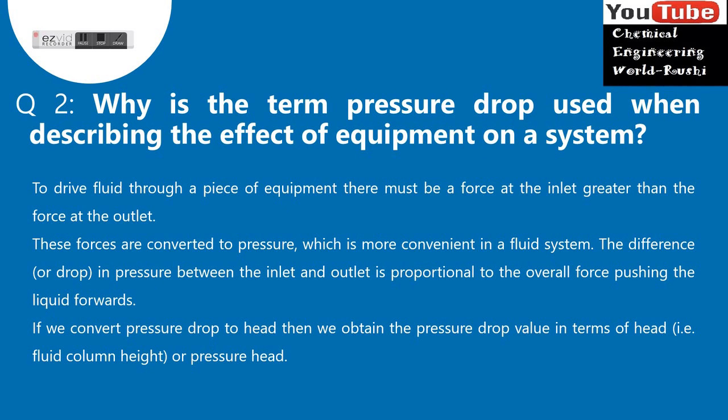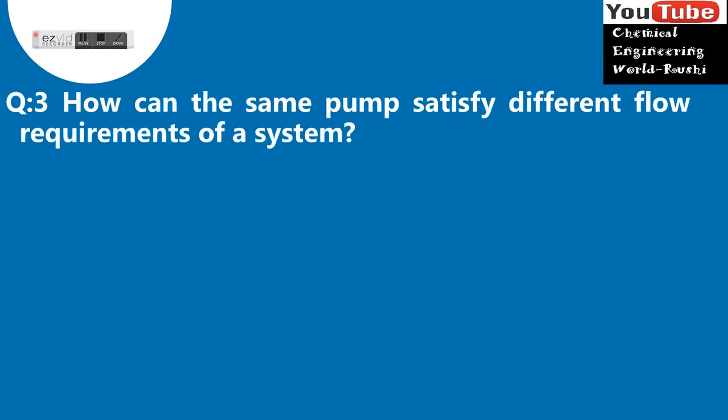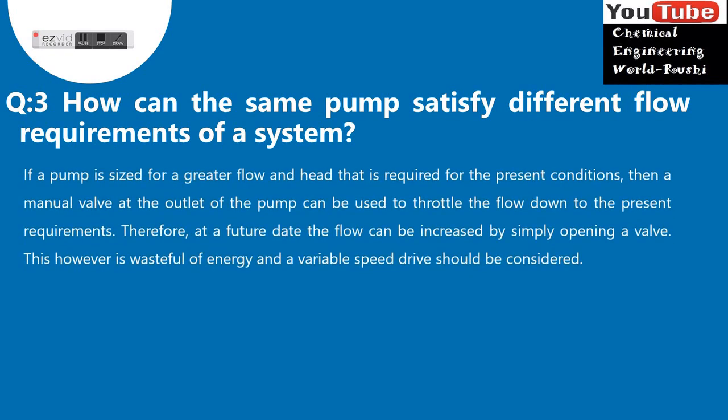Question 3: How can the same pump satisfy different flow requirements of a system? If a pump is sized for a greater flow and head than is required for the present conditions, then a manual valve at the outlet of the pump can be used to throttle the flow down to the present requirements. Therefore, at a future date the flow can be increased by simply opening a valve. This however is wasteful of energy and a variable speed drive should be considered.